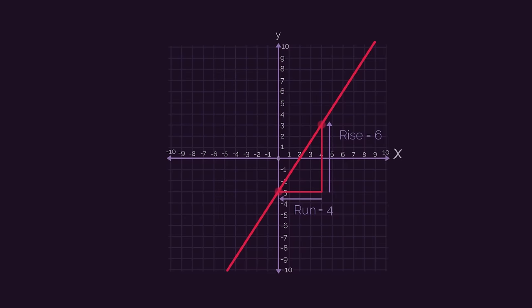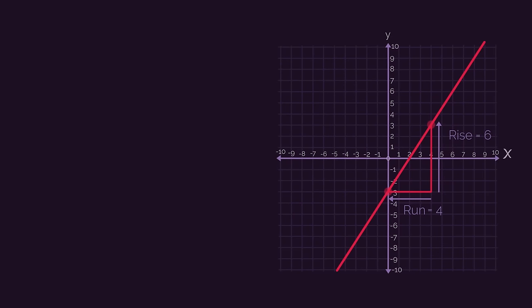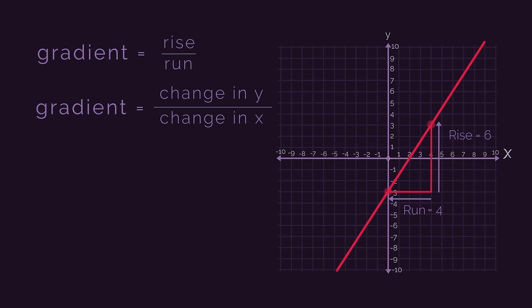All you need to remember is that the gradient is the rise over the run, or the change in y divided by the change in x. So for our line gradient is rise over run, so 6 divided by 4, which we simplify, so the gradient is positive 3 over 2.